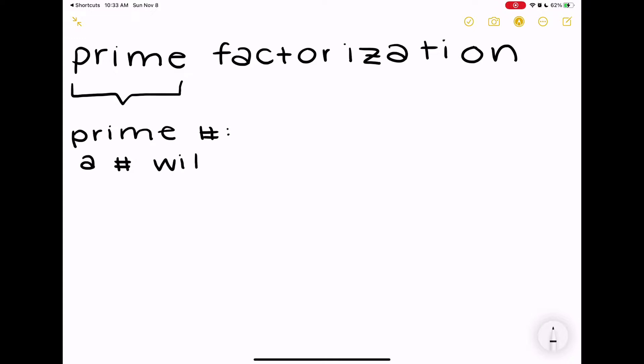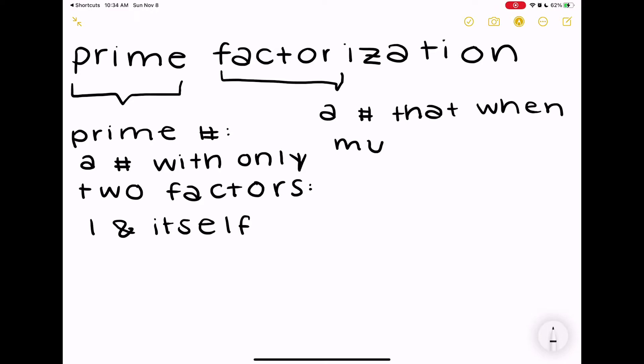A prime number is a number with only two factors, and those two factors are one and itself. So let's say we take 3 - the only two numbers that multiply to 3 are 1 and 3. A factor is a number that multiplies with another number to equal the product.